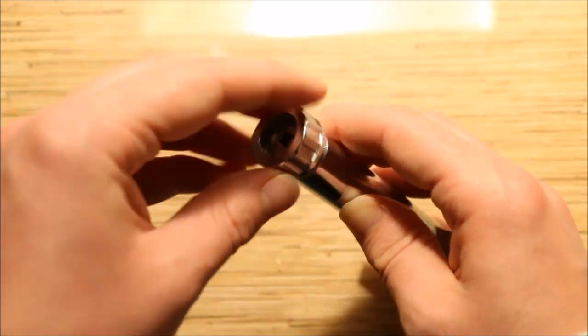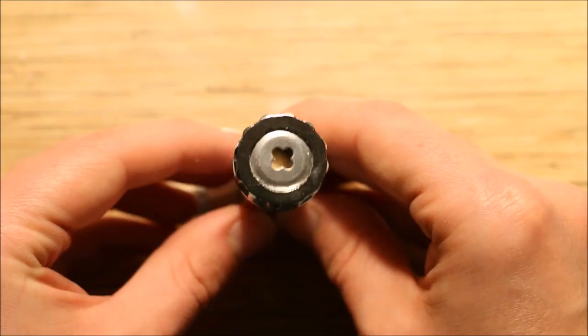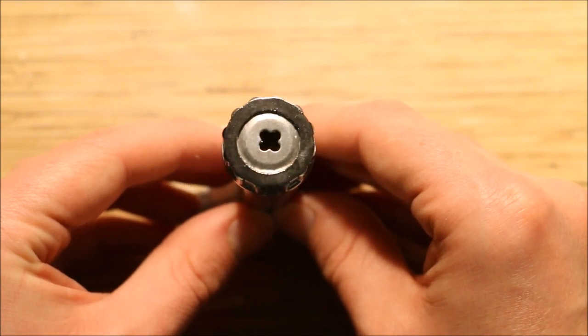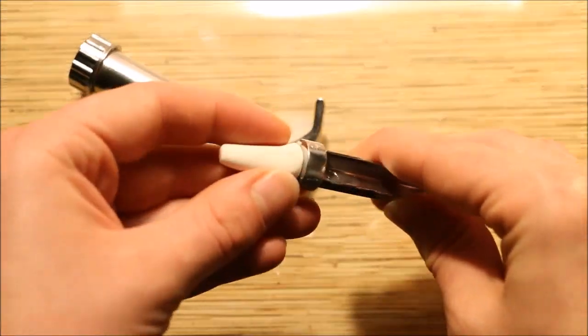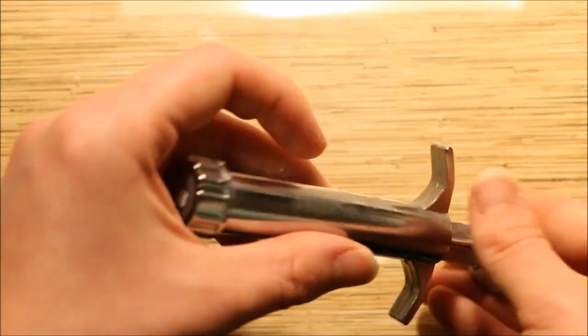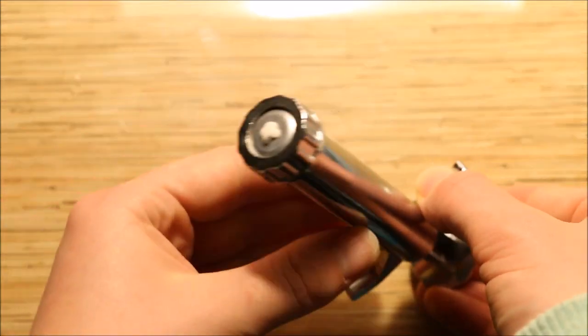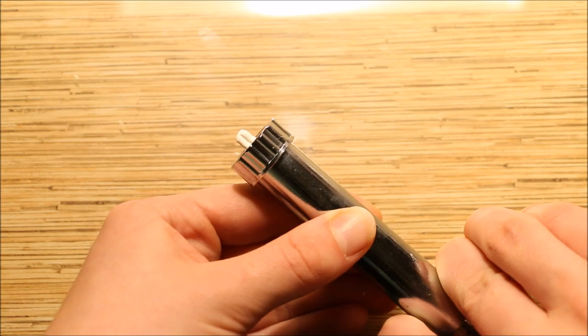So I screwed the tip that I wanted to use into the extruder and then took my clay and stuck it on the end of the pusher bit. Then I just pushed the clay through until it wouldn't go anymore, and then I cut it away using my blade.